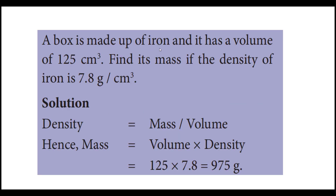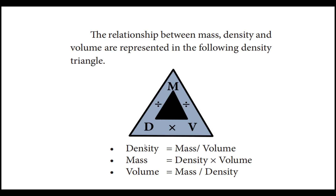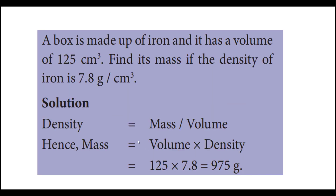Next problem: A box is made up of iron and it has a volume of 125 centimeter cube. Find its mass if the density of iron is 7.8 gram per centimeter cube. If you want mass, you can simply multiply density and volume. So mass equals volume into density. The volume is 125 centimeter cube and the density is 7.8 gram per centimeter cube. Since it is in the CGS system, you have to check whether the units are in centimeter or meter and convert accordingly. Here, 125 into 7.8 equals 975 gram. The mass of this box is 975 gram.